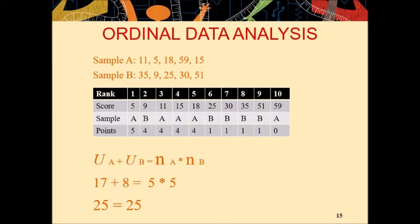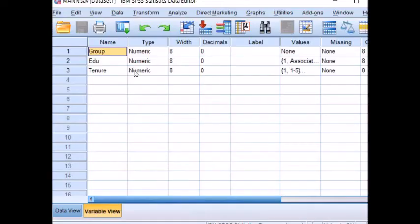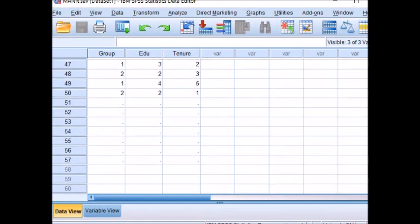Now, I will tell you how to conduct this Mann-Whitney U test in SPSS. Now, you have understood the logic, the procedure and mathematics or statistics working behind Mann-Whitney U test. It would become very easy for you now to understand how SPSS calculates Mann-Whitney U statistics. So, this is the variable view. We have one grouping variable and two ordinal variables, education and tenure. This is the data view, we have 50 cases.